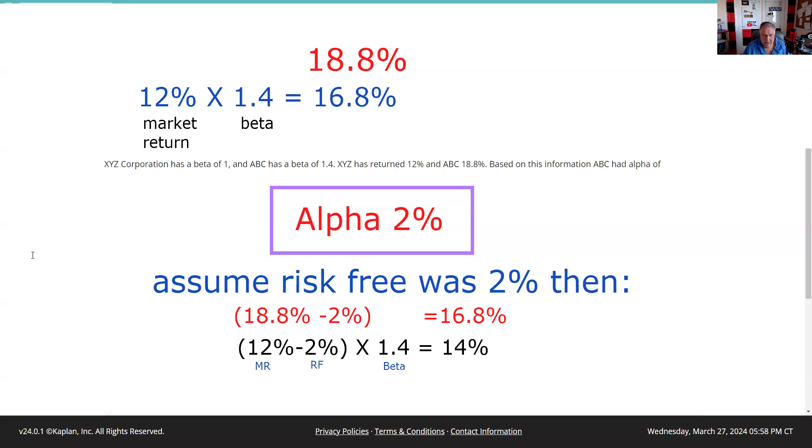I would know beta is a measurement of volatility as compared to the market as a whole. So 1.4 means this is 1.4 times more volatile than the market as a whole. And then alpha is that excess return.